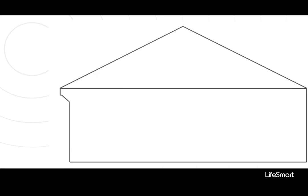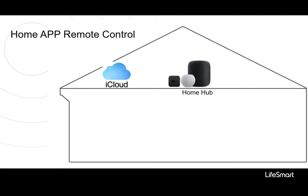So if I leave home and switch my phone to cellular mobile network, can I still use the Home app to control the HomeKit devices? With the help of HomeHub, the gateway can still receive commands from the iOS device.